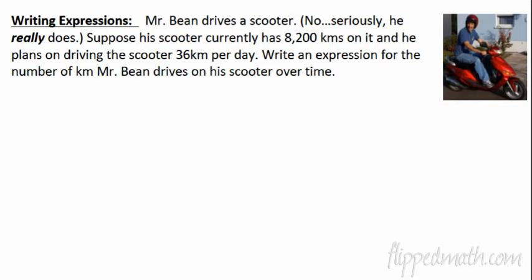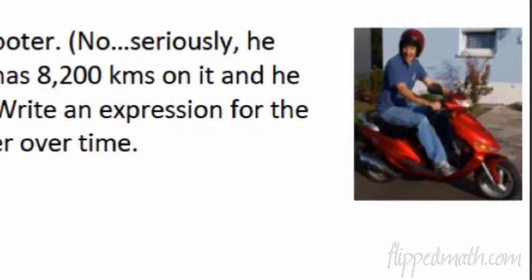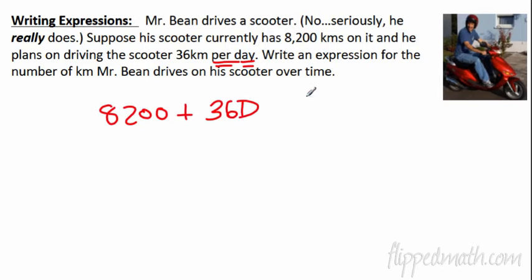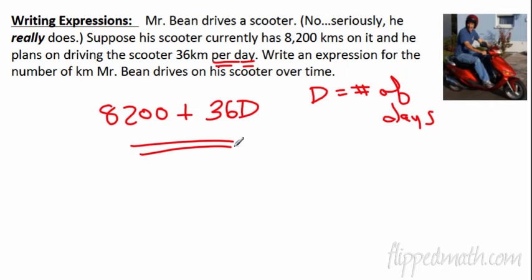We're going to do a word problem. Mr. Bean drives a scooter — seriously, he really does. The scooter has 8,200 kilometers on it and he plans to drive 36 kilometers per day. Write an expression for the total kilometers over time. Starting with 8,200 kilometers, you're adding 36 per day, so let D equal the number of days. The expression is 8,200 plus 36D.